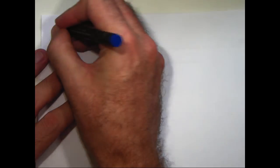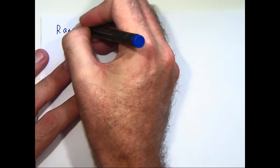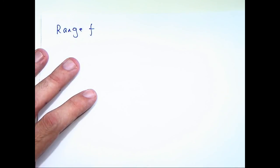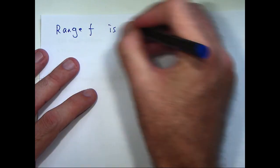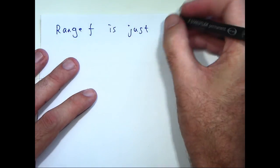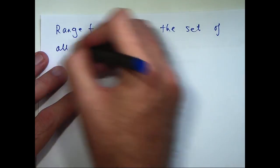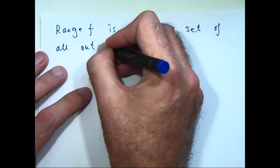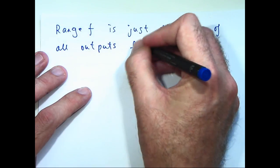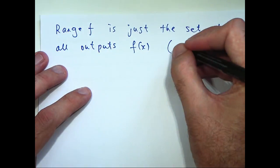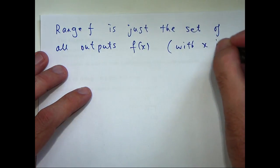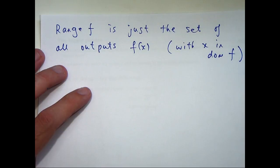We're asked to calculate the range of f. Now let's just, in a nutshell, remind ourselves of what the range of f is. It's just the set of all outputs, f(x), where we assume, of course, the x points come from the domain of f.